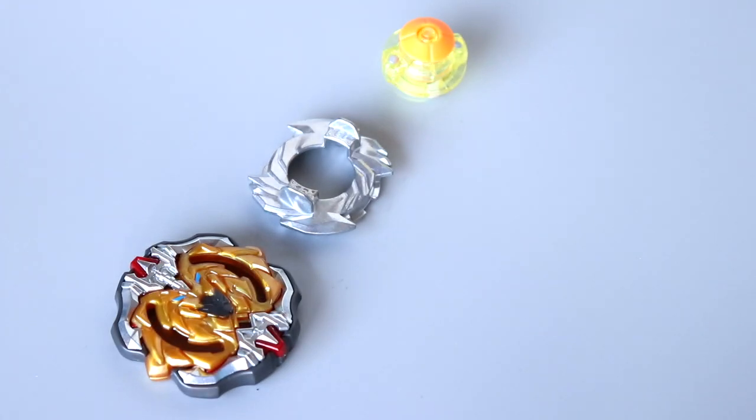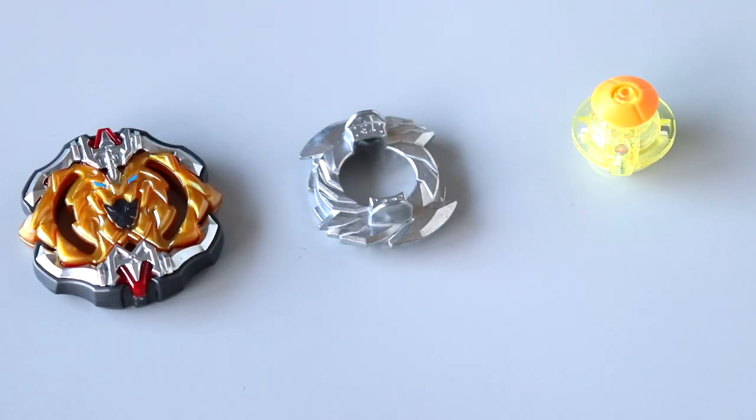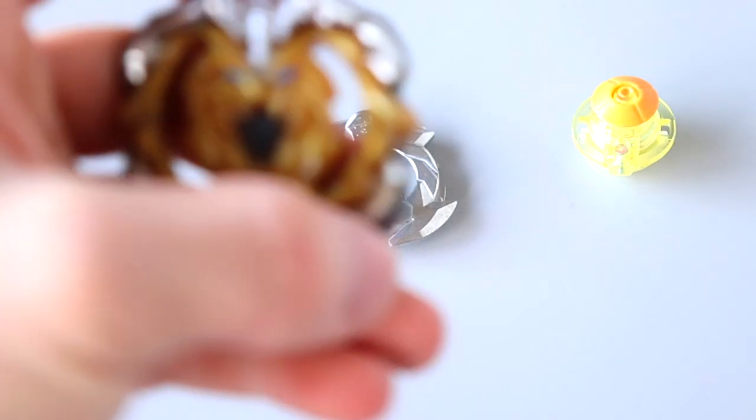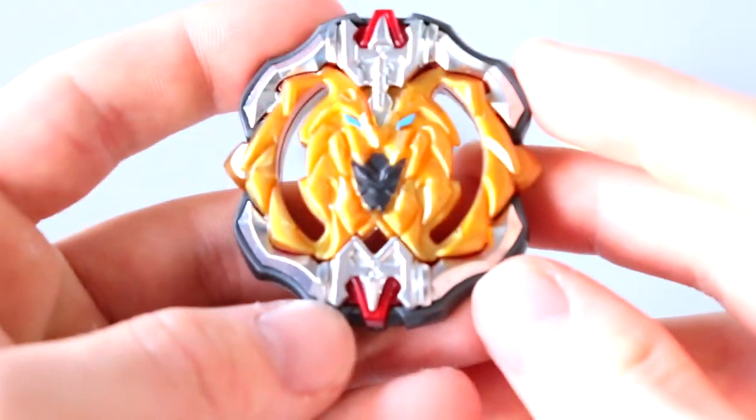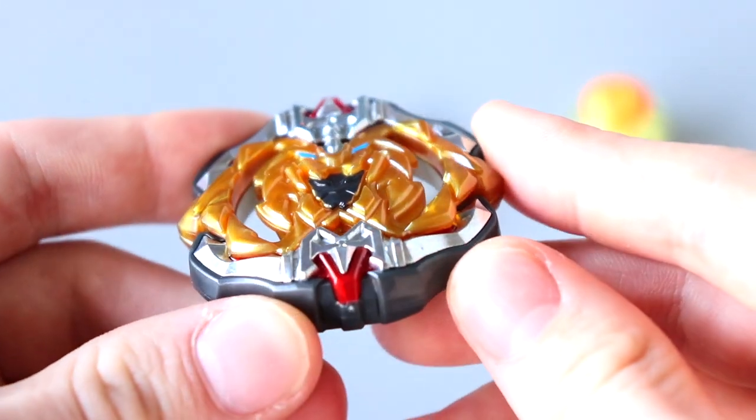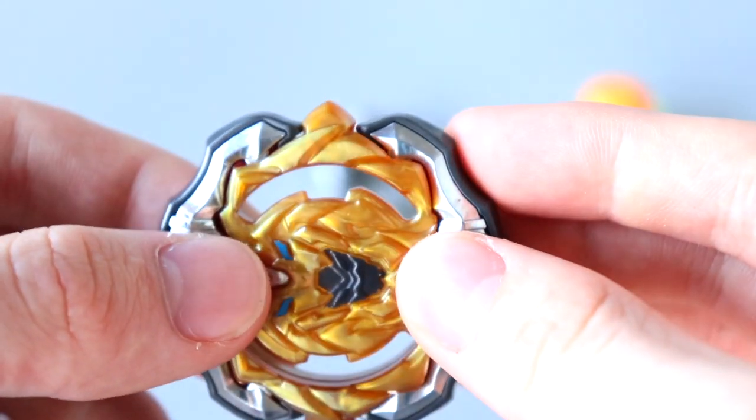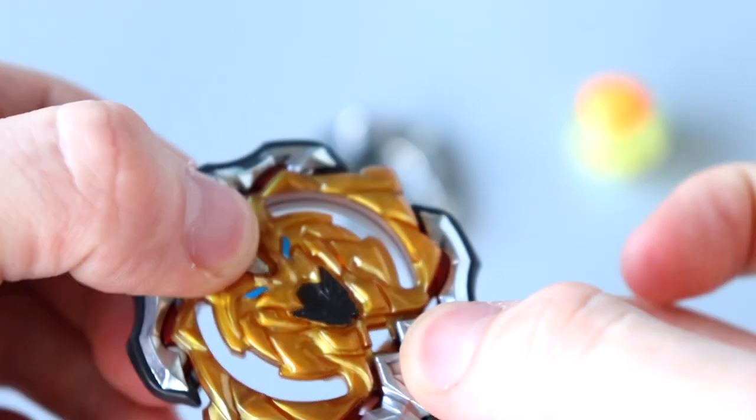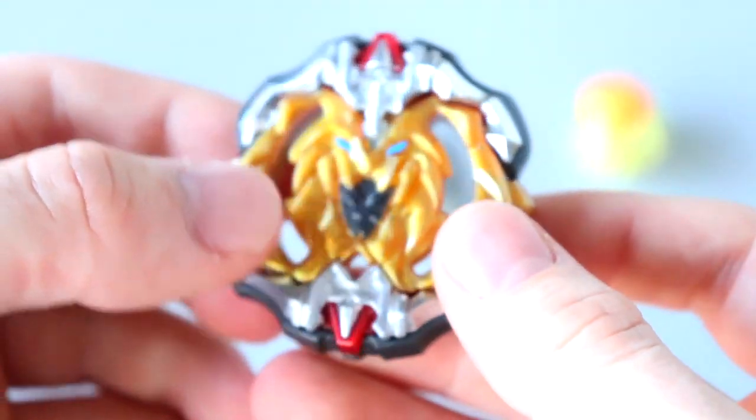So I got all the parts out of the box. Let's start out with the layer which is Archer Hercules. So this layer looks really nice. I like the colors of it, although it seems a little bit plain. The colors are kind of bland. I wish there were some more bright colors in it. But I do like how it has this gimmick that makes the layer get a little wider, which will hopefully help with the stamina.